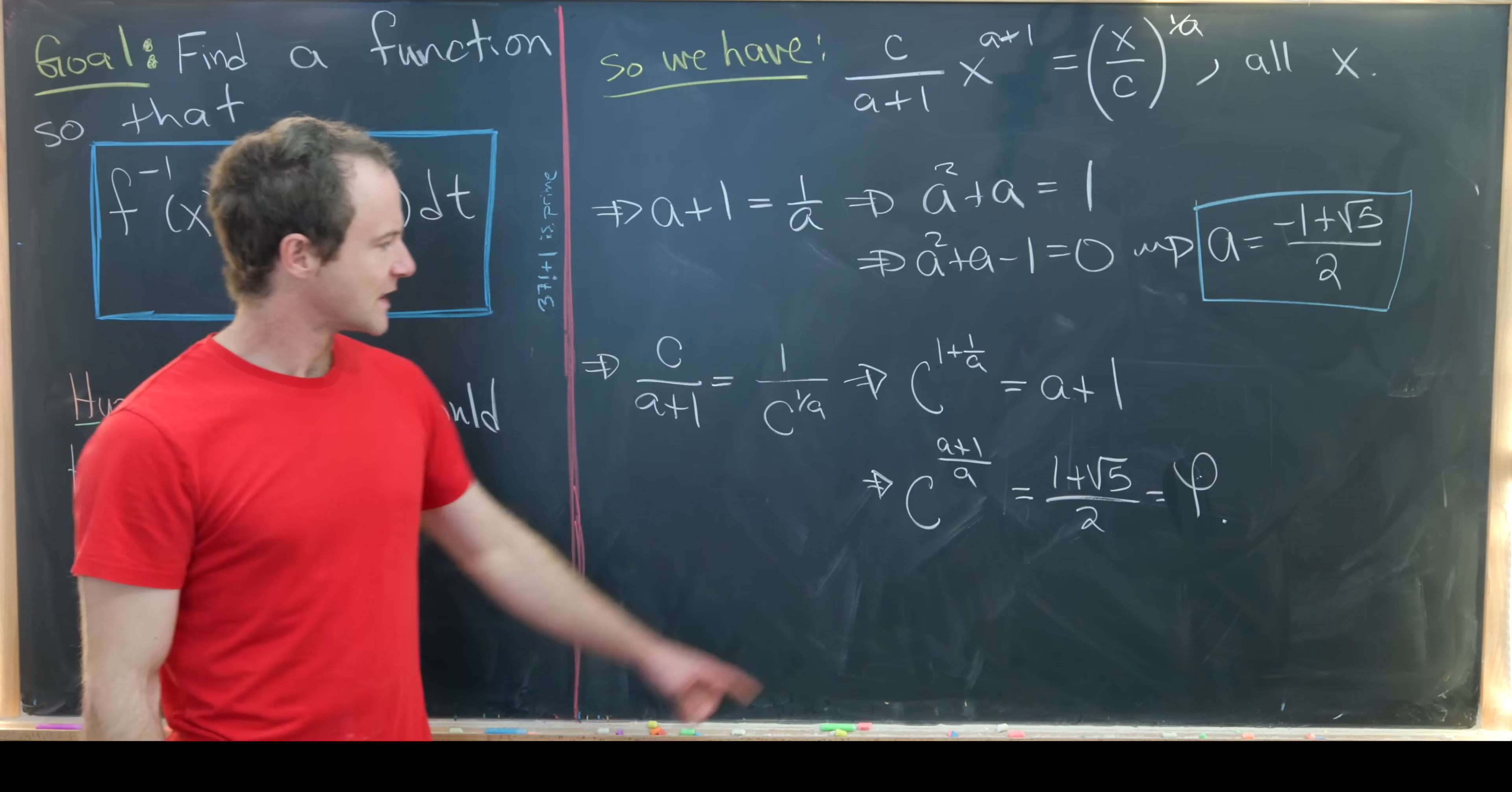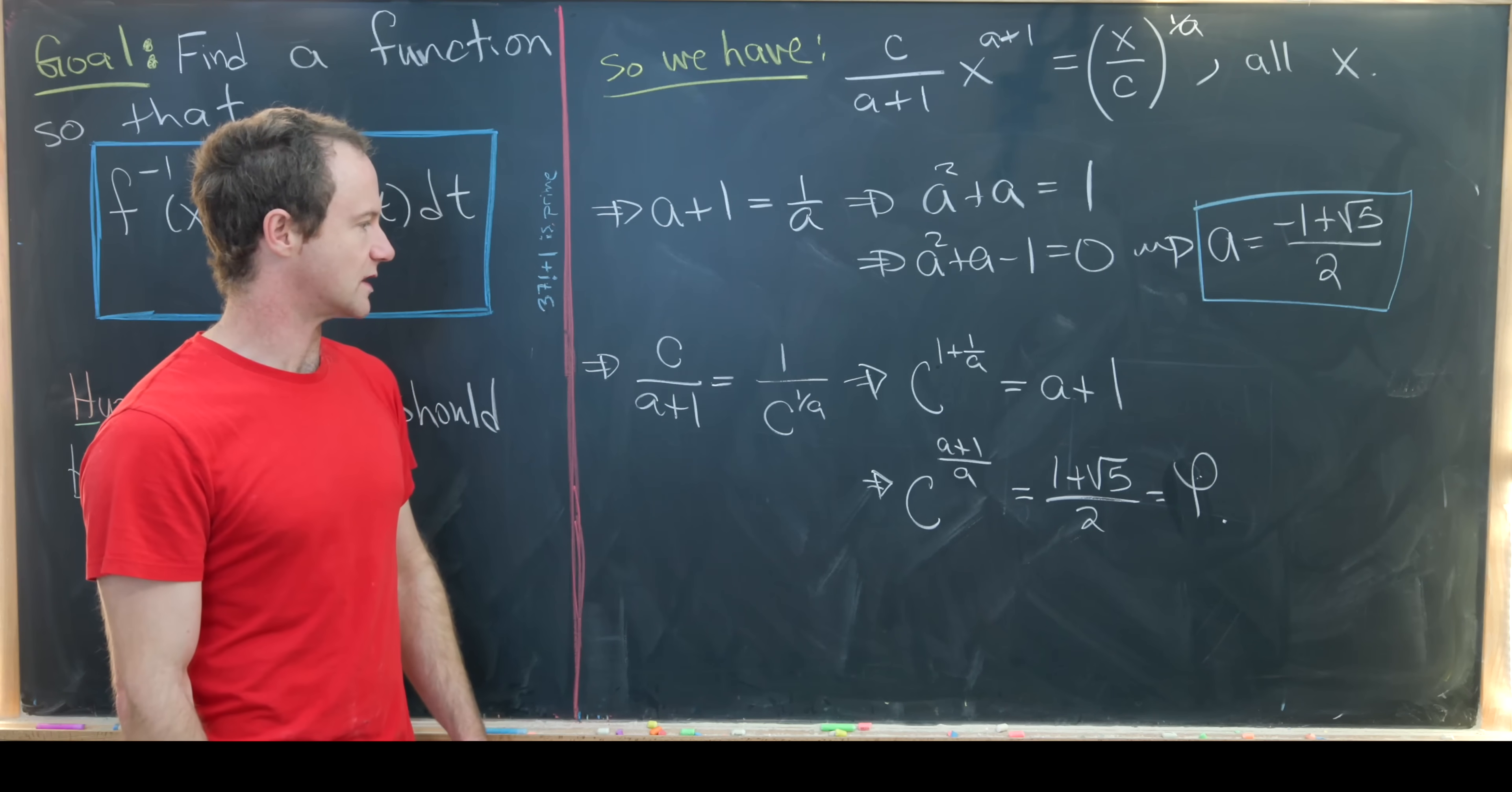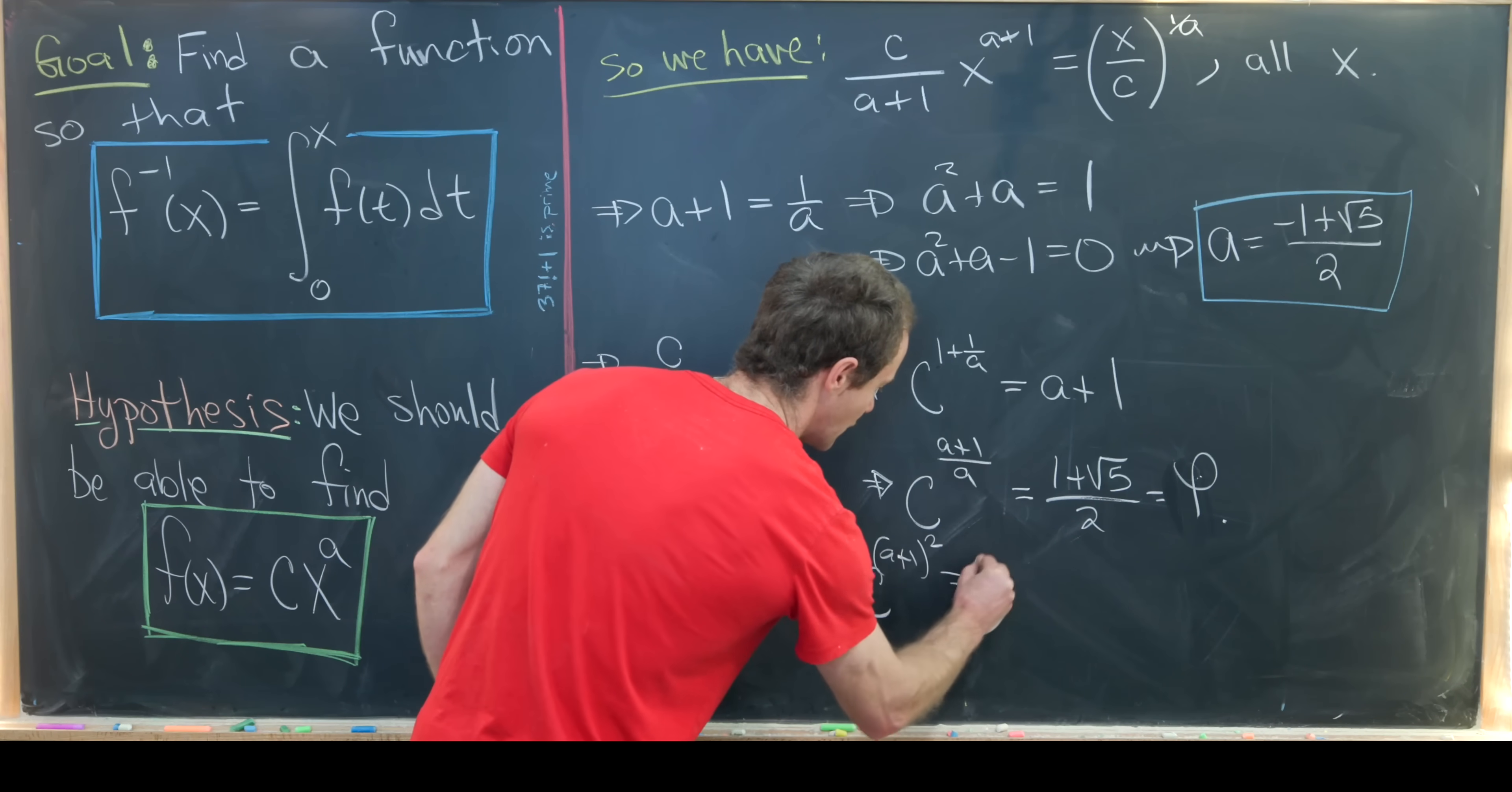That's pretty interesting. I think we can simplify this a bit as well. We have (a+1)/a, but that's the same thing as 1/a times (a+1). But 1/a times (a+1) is the same as (a+1) squared because those are both equal. So that gives us c to the (a+1) squared equals phi.